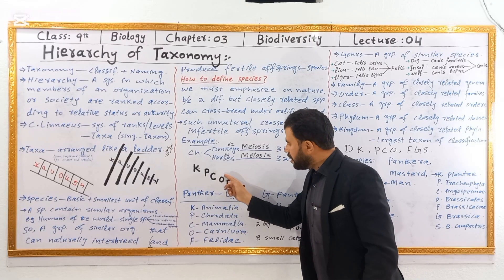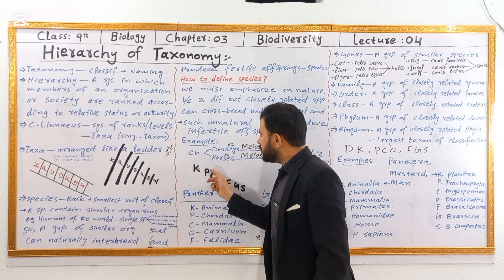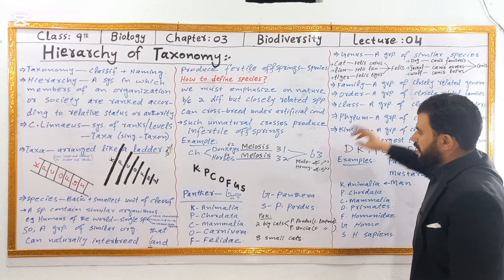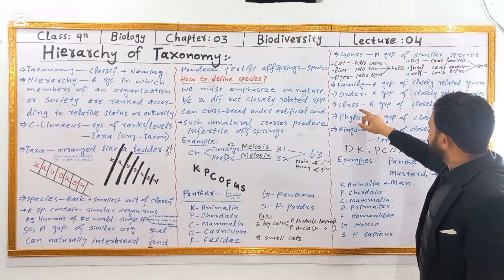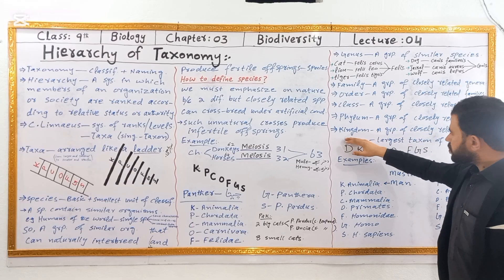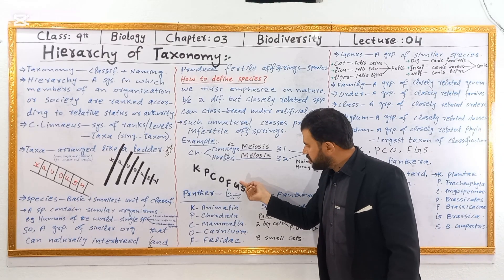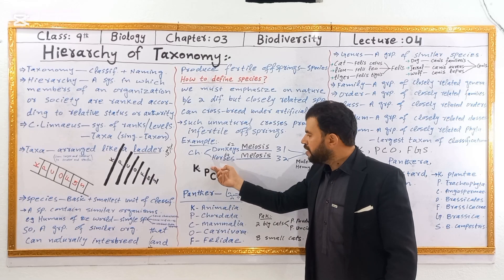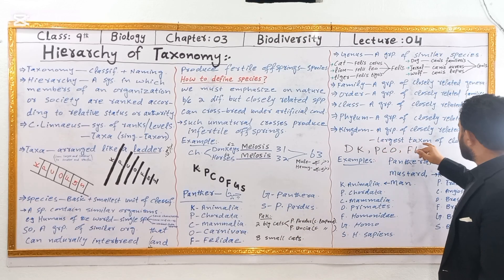A family is a group of closely related genera. A class is a group of closely related orders. A phylum is a group of closely related classes. A kingdom is the largest taxonomic classification. A group of closely related families forms an order, and related orders form a class, related classes form a phylum.